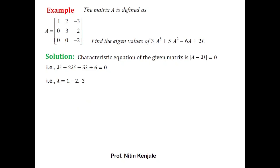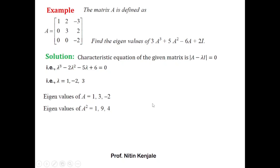As seen on the previous slide, eigenvalues of A raised to m are λ raised to m. So eigenvalues of A² are 1² = 1, (−2)² = 4, and 3² = 9. Similarly, eigenvalues of A³ are obtained by cubing: 1³ = 1, 3³ = 27, and (−2)³ = −8. So eigenvalues of A² are 1, 4, 9 and eigenvalues of A³ are 1, 27, −8.